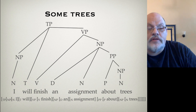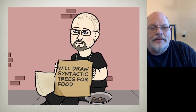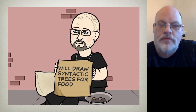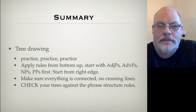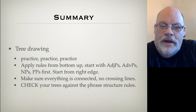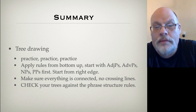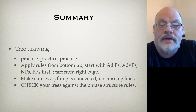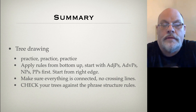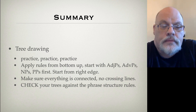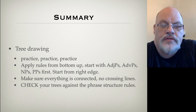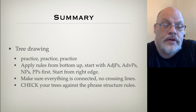There's the completed bracketed structure, which corresponds to that tree. Now, syntactic tree drawing probably isn't one of the more useful tools in life, but it helps us understand how sentences are structured, so getting good at it will help you do better syntactic analyses. To summarize: there are two ways of drawing trees; we've talked about the bottom-up method, which is best for beginners. Apply the rules starting with adjectives and adverb phrases, then NPs and PPs — sometimes cycling those together — then verb phrases, then TPs. Make sure everything is connected, there are no crossing lines, and once you've drawn your tree, check it against your phrase structure rules.